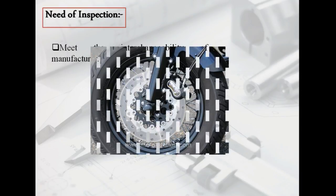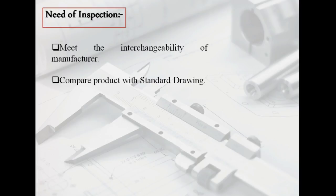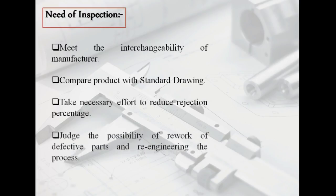Our second need is compare the product with standard drawing, that is inspection. Our third need is take the necessary effort to reduce rejection percentage. And fourth need is judge the possibility of rework of rejection parts.